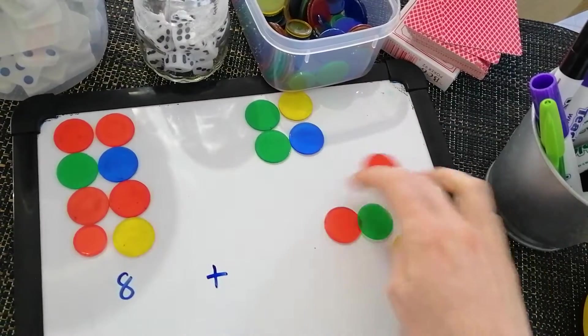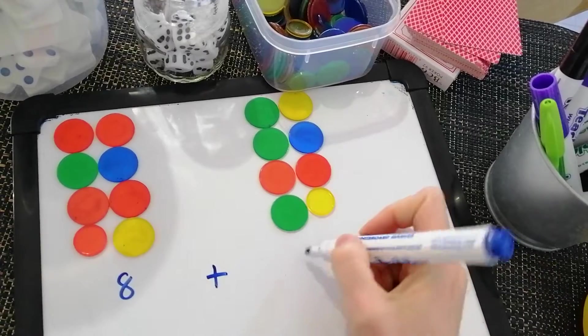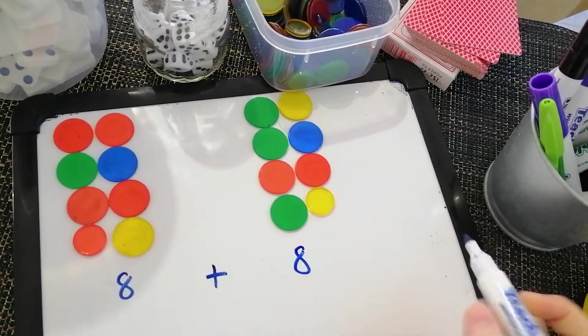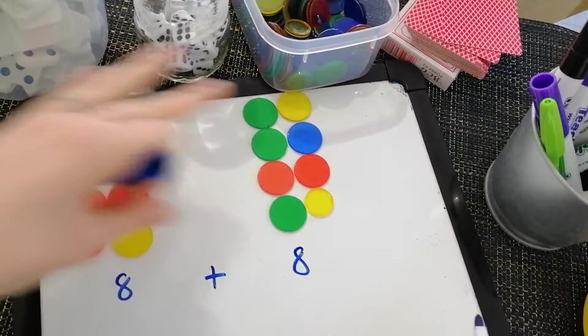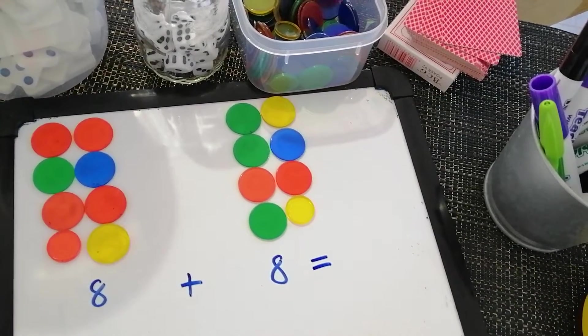So eight plus how many did I pick up in this pile? Two, four, six, eight. Oh, I picked up the same number. Eight plus eight. Now I'm going to figure out how many counters there are all together. So I'm going to end up with one bigger number, which is my answer.